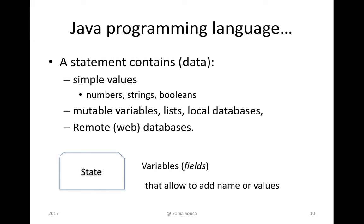A statement can also contain a Boolean — the value true or false. Or more complex values, like many variables, a list of something, local databases, remote databases. Basically, the statement is what describes the object — the state of the object, the name, the brand, and so on.